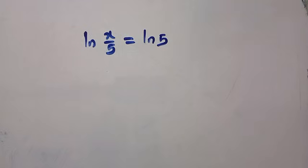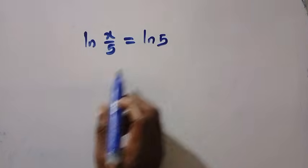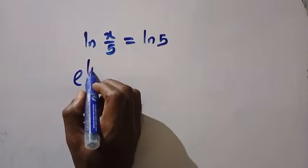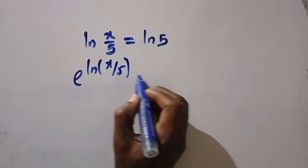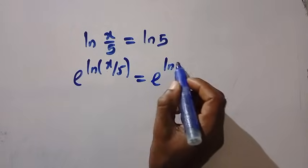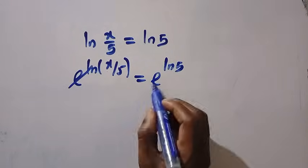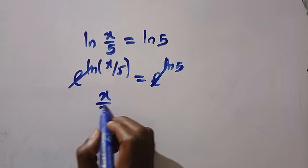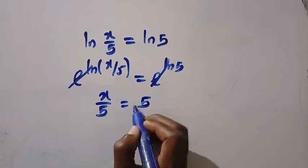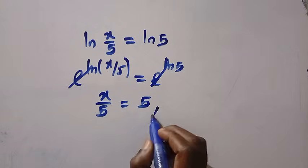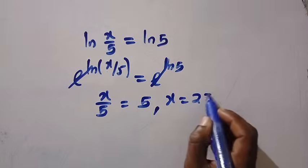And if we try to compare ln as well we are going to have again if we have ln x over 5 equals to this. If we introduce exponential we have exponential x over 5 equals exponential of ln 5. Exponential and ln cancelled and here we have x over 5 equals 5. So with this our x equals 25.